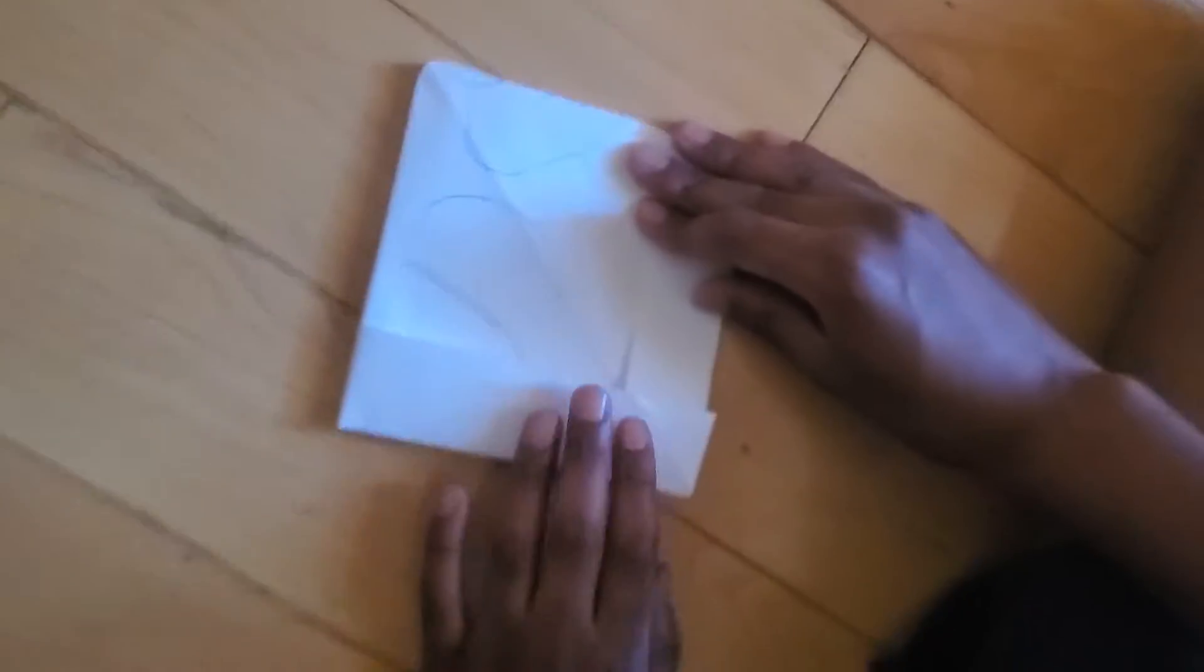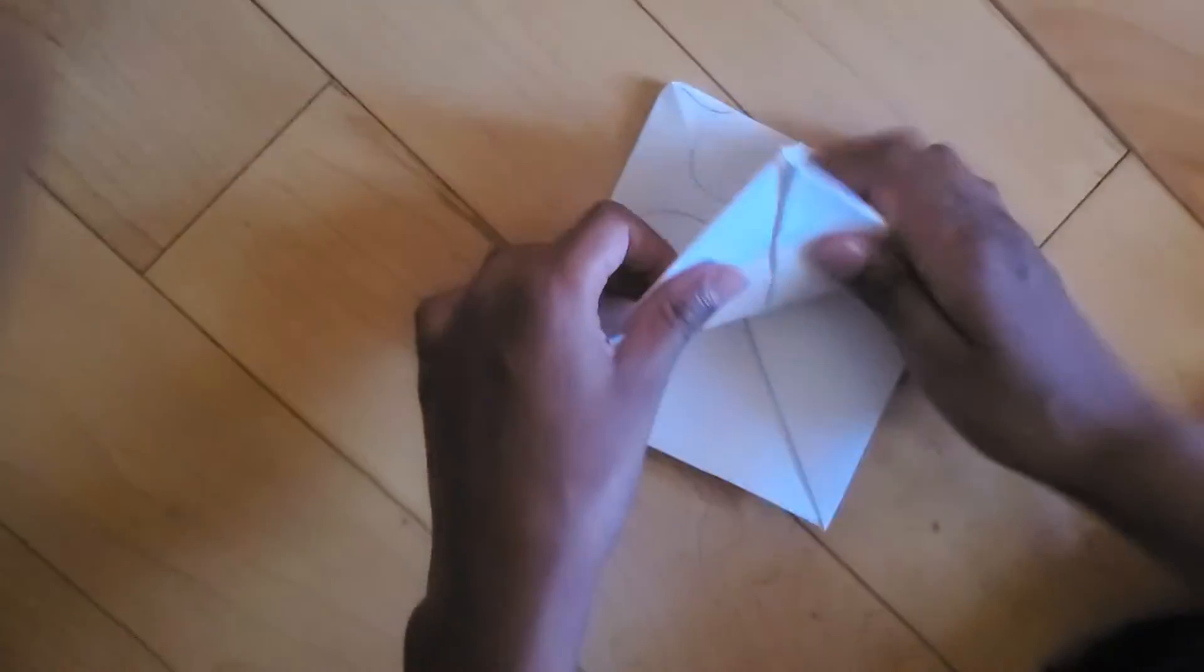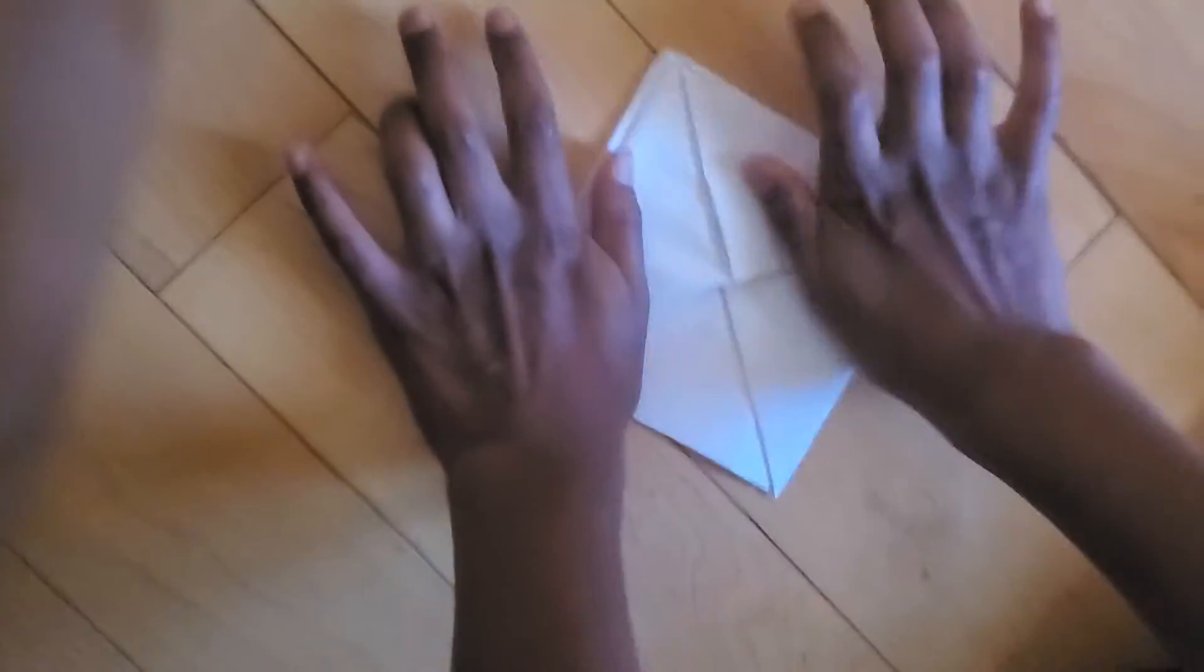There will be a little V. You take the bottom side with the V and pull it up. So it looks like that.